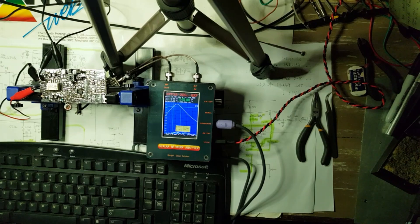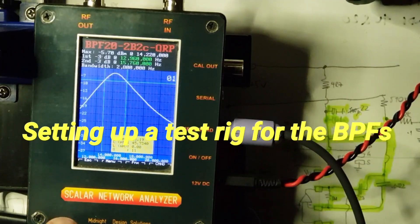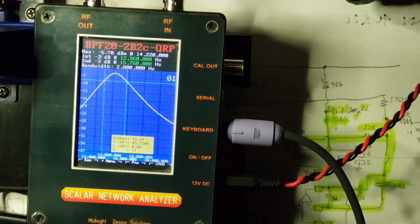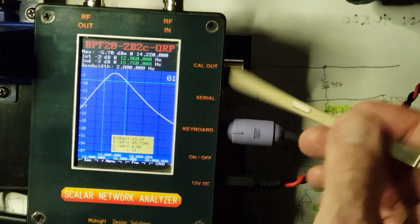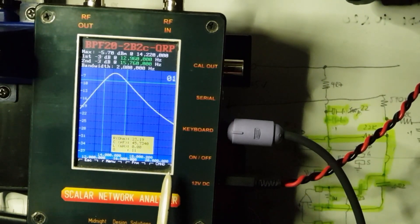This is the test rig for the two bandpass filters. So this is my old scalar network analyzer. It's from Midnight Design Solutions. Another fellow home brewer very kindly passed it on to me a few years back. And I've quite got used to using it. So I've set up a script here, which spans from around about 10 megahertz to about 22 megahertz.